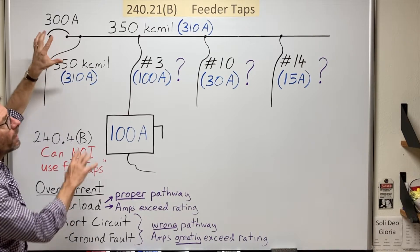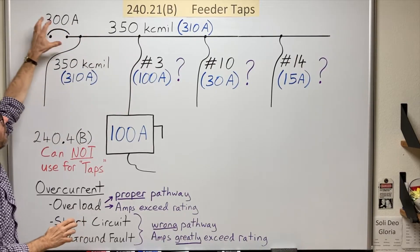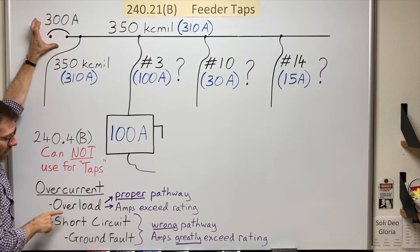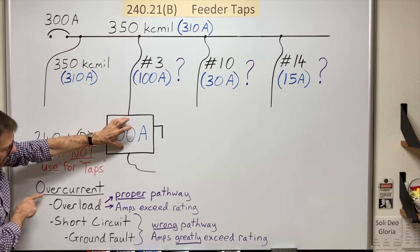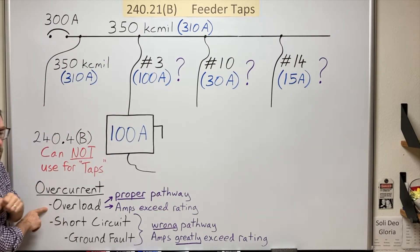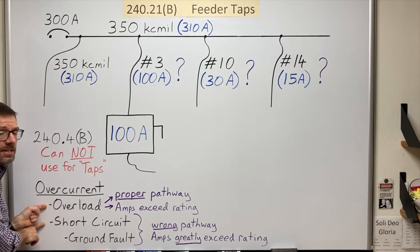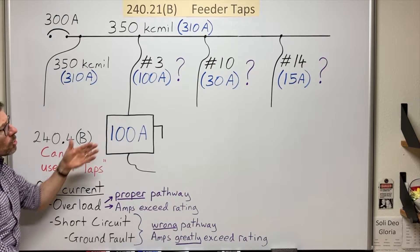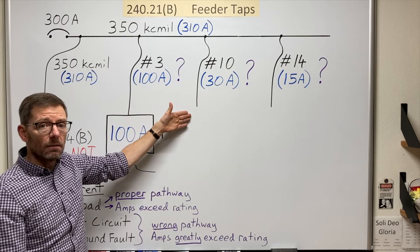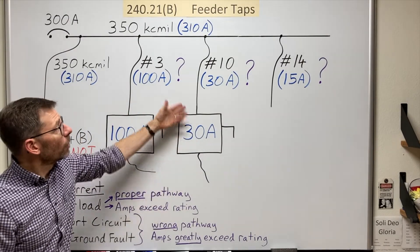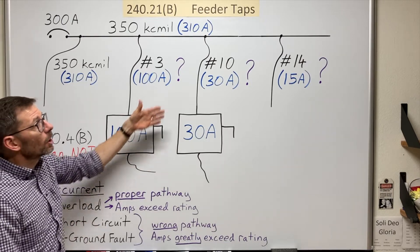Yes. So what we do with tap conductors is we use the device ahead of it to provide the short circuit protection. And the device after it to provide the overload protection. And it's all based on these characteristics of these concepts. So if I can do that here, could I do it on the 30 amp as well? Yes, I believe I can. Again, it would work in the same concept using the overload and short circuit concepts.